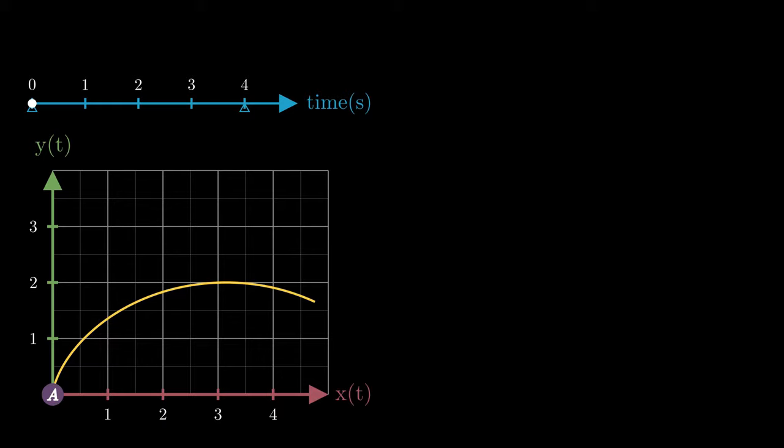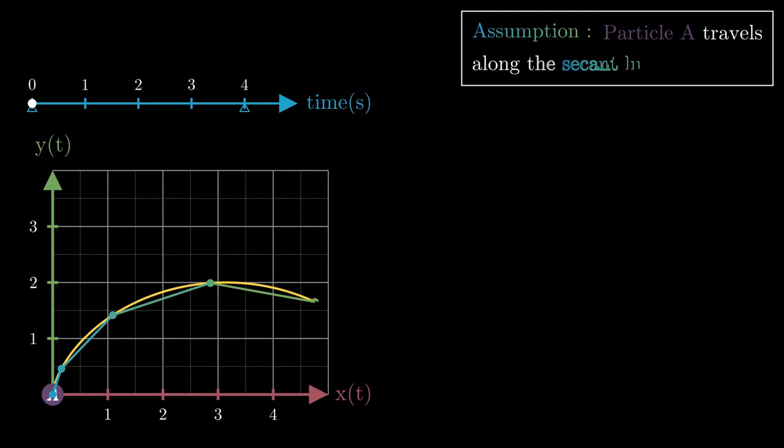The assumption that we'll make here is that particle A travels not exactly along the curve, but along the secant lines to the curve resting on those points corresponding to the inputs along the time axis that are evenly spread out by a distance delta t equals 1 second. So particle A travels along these secant lines during each of the delta t durations while abruptly shifting direction every delta t seconds. And notice that these distances need not be the same.